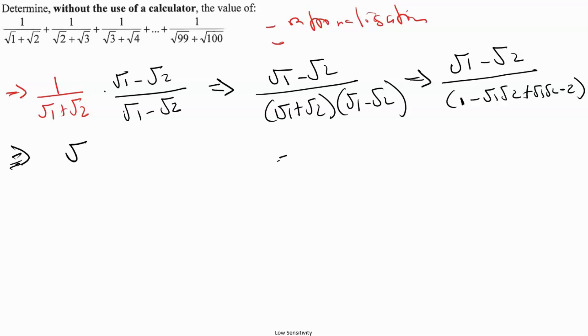We can simplify this. Root 1 minus root 2 over, this will cancel out, minus and plus. So this becomes 1 minus 2, which becomes minus 1.